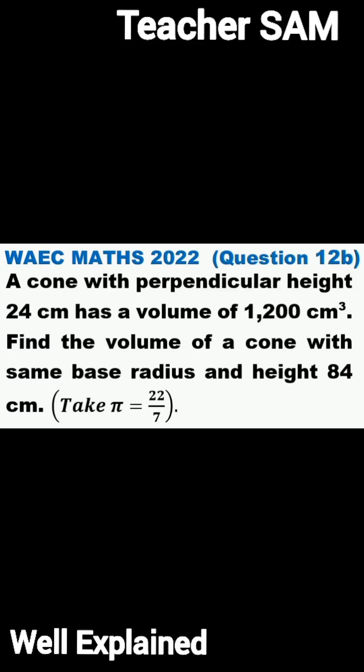A cone with perpendicular height 24 cm has a volume of 1,200 cm cubed. Find the volume of a cone with same base radius and height 84 cm. Take pi to be equal to 22 over 7.